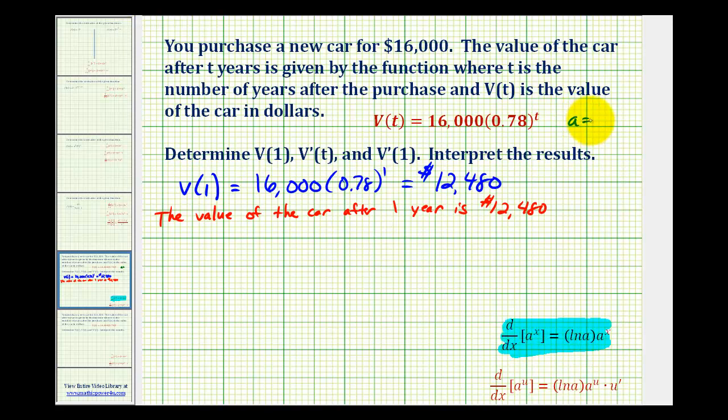Notice a is equal to 0.78, so V'(t) will have 16,000 times the derivative of 0.78 to the power of t, which will be natural log 0.78 times 0.78 to the power of t. Notice our derivative is natural log a times a to the t, and again a was 0.78.